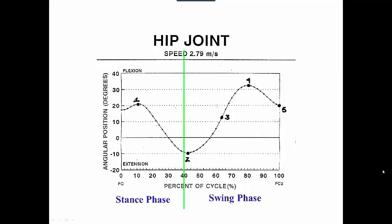Okay, let's look at the hip joint. Again, it's running at 2.79 meters per second. This is a position graph.